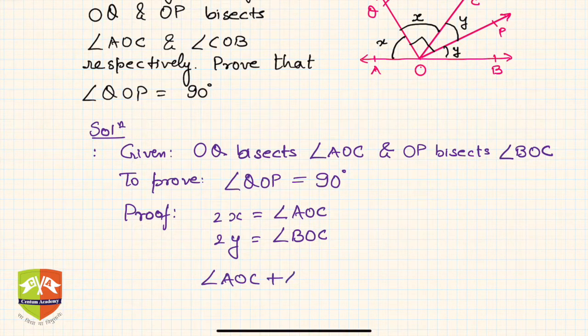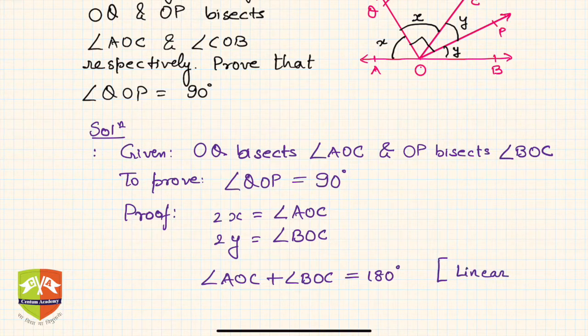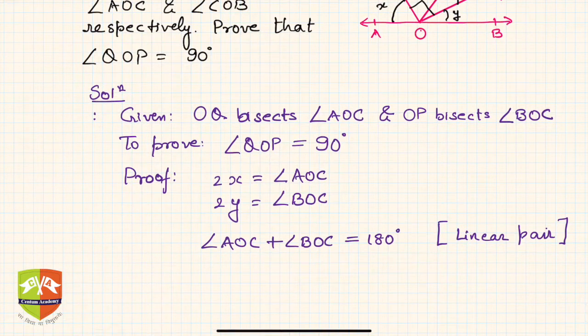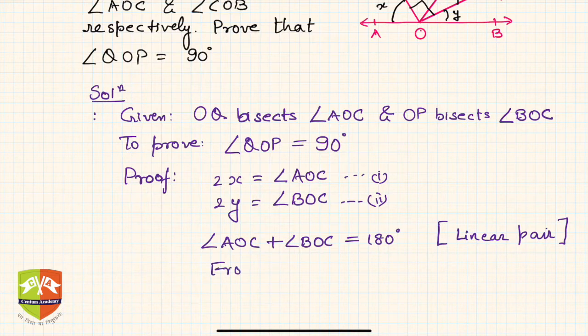Now, angle AOC plus angle BOC equals 180 degrees. This is a critical step - why 180 degrees? Because they form a linear pair. Ray OC stands on line AB, hence linear pair.